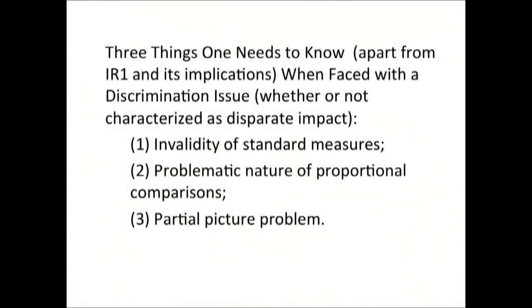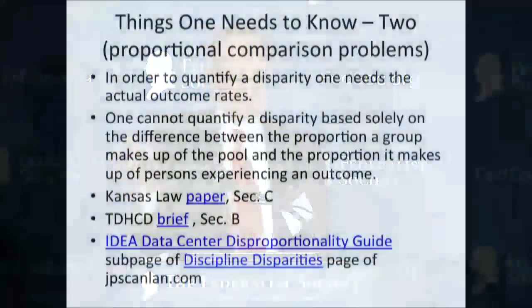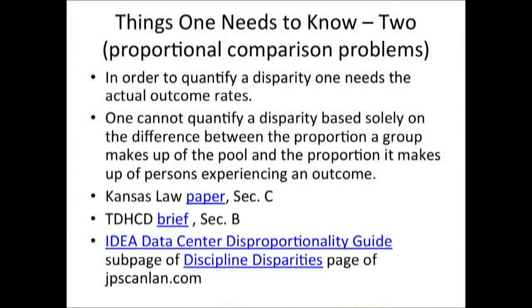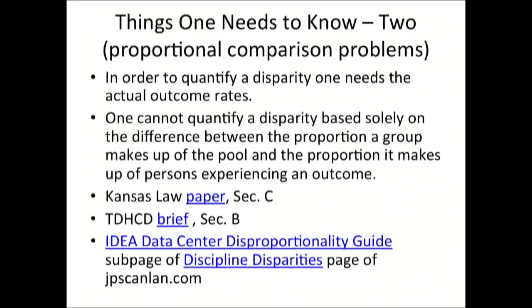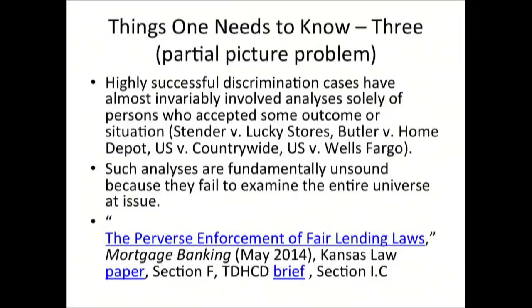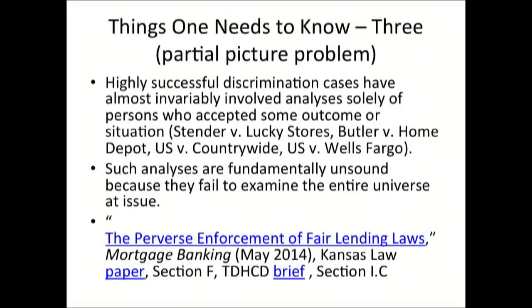There are several things one needs to know in analyzing discrimination issues: first, none of the standard measures is any good; second, you can't analyze disparity based on the proportion the group makes up of the pool versus the proportion experiencing the outcome; and third, almost all highly successful litigations involve looking solely at persons who accepted some situation — either the most desirable or a lesser one. None of those analyses are sound, not because people forfeit their right to a discrimination claim, but simply because the analysis is only looking at part of the picture — persons who said yes, not those who said no.